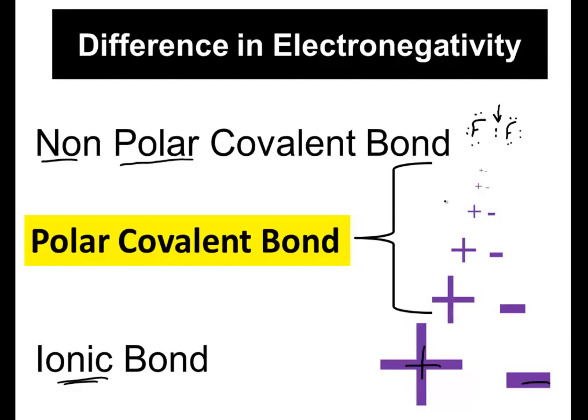And a polar covalent bond therefore is anything in between there. From electronegativity value and difference of 0.4 all the way up to the difference being 2.0, this whole spectrum is a polar covalent bond illustrating that the poles are getting larger as my difference in electronegativity is increasing.